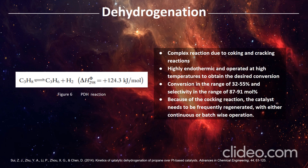Figure 6 shows the propane dehydrogenation reaction. This is a complex reaction due to coking and cracking side reactions. It is highly endothermic and operated at high temperature to obtain the desired conversion. The conversion is in the range of 32 to 55% and the selectivity is in the range of 87 to 91 mole percent. Because of the coking reaction, the catalyst needs to be frequently regenerated with either continuous or batch-wise operation.